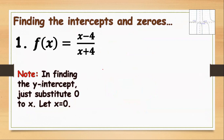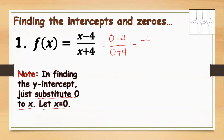Now let us find the y-intercept. To find the y-intercept, substitute 0 for x. So we have 0 minus 4 all over 0 plus 4. Simplifying, we get negative 4 over positive 4. Since they have different signs, the answer is negative: negative 4 divided by 4 equals negative 1.